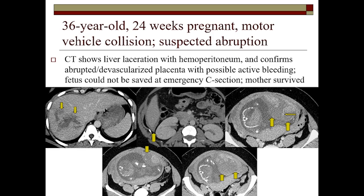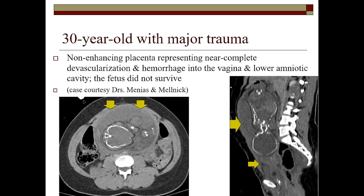Here is a case from my institution of a 24-week pregnant woman who had significant injury. You can see the complex liver laceration and hemoperitoneum. On the upper right you can see a cleft in the placenta — this placenta is abrupted and disrupted, with active hemorrhage as demonstrated by that small arrow, and bulging posteriorly from adjacent hemorrhage. Unfortunately, this fetus did not survive. The CT was done for staging of the mother's organs, and the obstetrical team knew the fetus was at risk and that there was an abruption, but unfortunately the baby didn't survive.